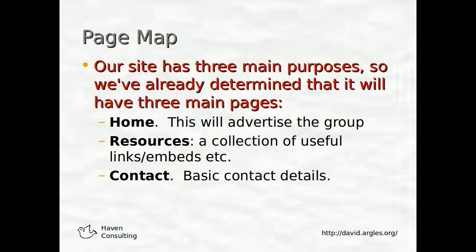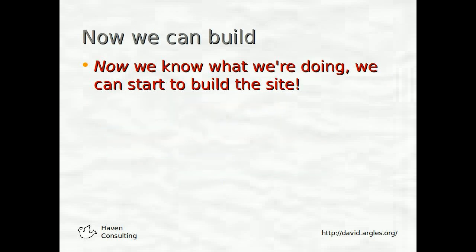Having done that, let's think about the page map. Our site has three main purposes, which pretty much determines we'll have three main pages: the home page, which will advertise the group and say a bit about what's on the site; a resources page with the collection of useful links and embeds; and a contact page with basic where-to-find-us and how-to-contact-us details. And now we can build — let's get on with it.